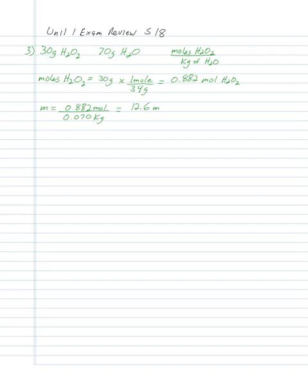Number four: what are the major solute-solvent interactions when KBr dissolves in water? KBr is a metal and a non-metal, so it's going to break up into potassium ions and bromide ions. Water is polar and has a dipole - delta minus on the oxygens, delta plus on the hydrogens. Those allow it to interact electrostatically with the ions. So the answer is B - ion-dipole interaction.